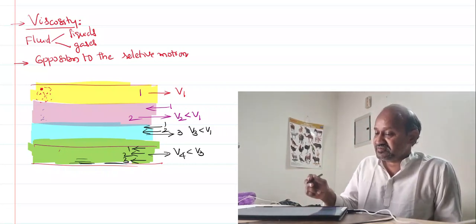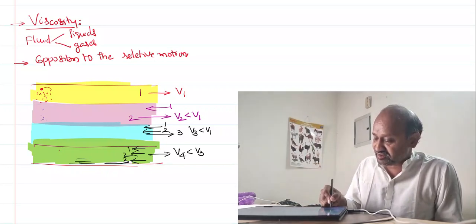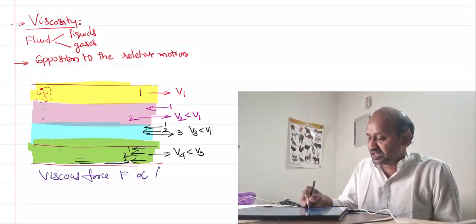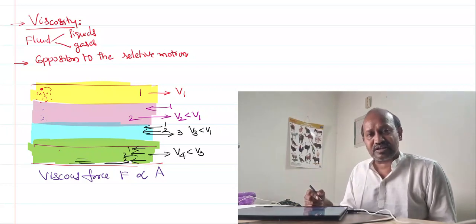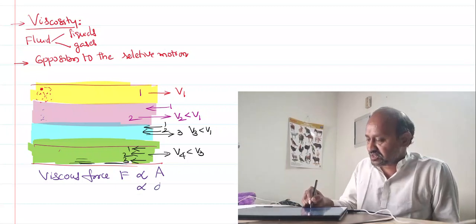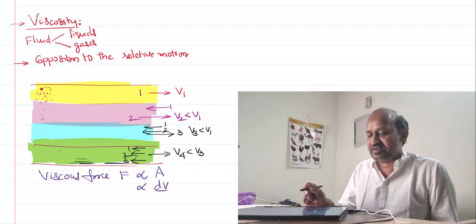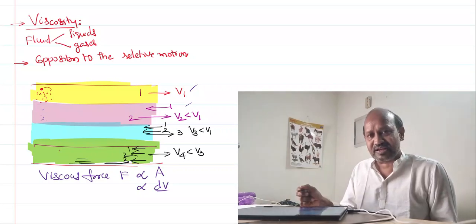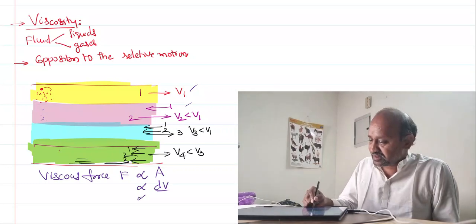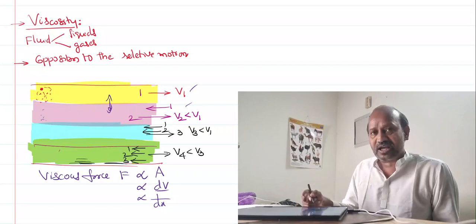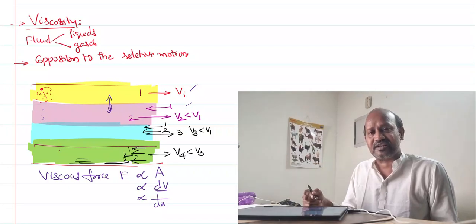How do you measure this viscosity? The force opposing relative motion is called the viscous force. Viscous force F is directly proportional to the area of the fluid flow — larger the area, more the number of layers, more the opposition. It is also directly proportional to the difference between the velocities of the layers. If the velocity difference between the first and second layers is more, obviously the opposition is more. It is inversely proportional to the distance between the layers — when the distance becomes more, the influence of one layer on another becomes less.